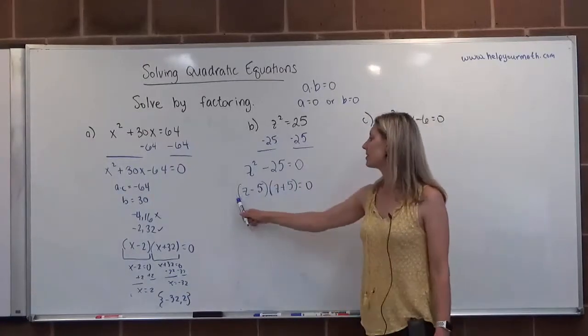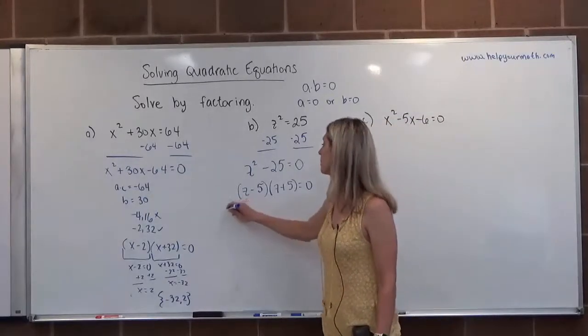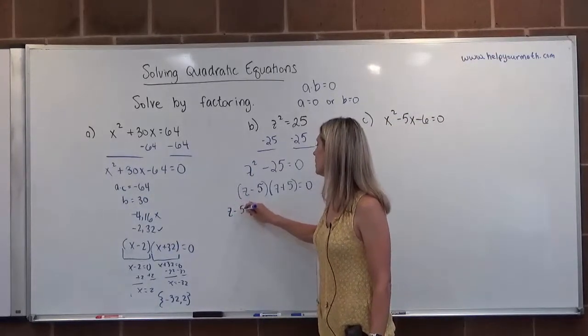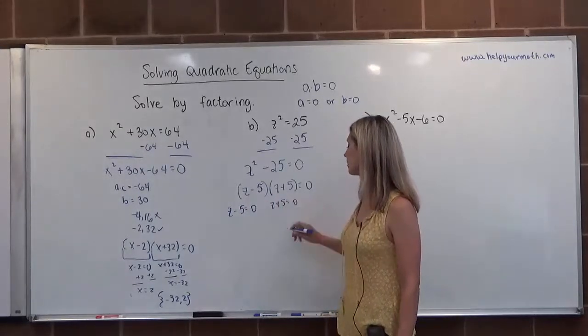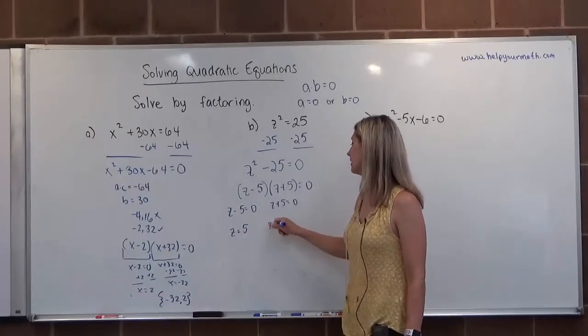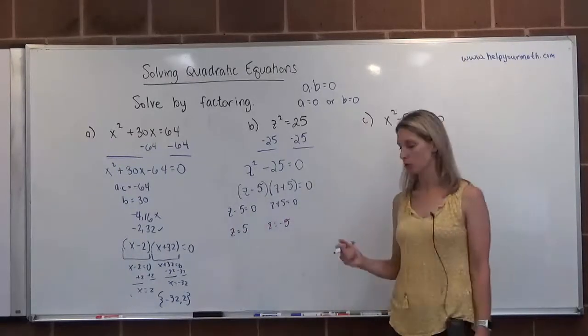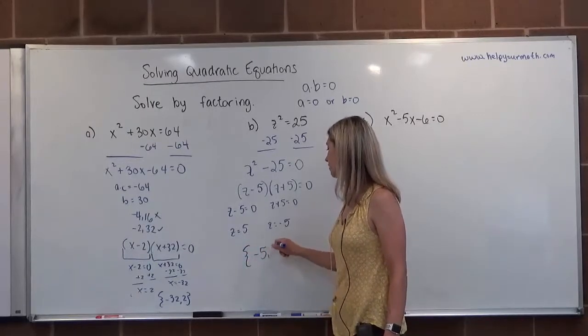Now we have something times something equals zero. One of those two things must be zero, so either z minus 5 is equal to zero or z plus 5 is equal to zero. In this case, 5 would be the solution. In this case, negative 5 would be the solution. We're going to open up our brackets and put negative 5 comma 5.